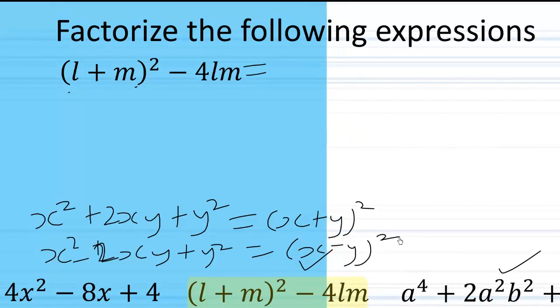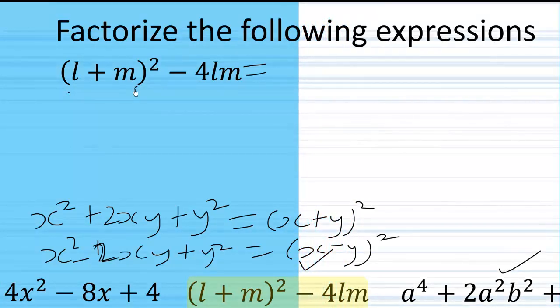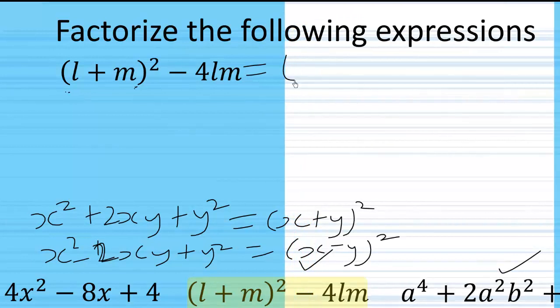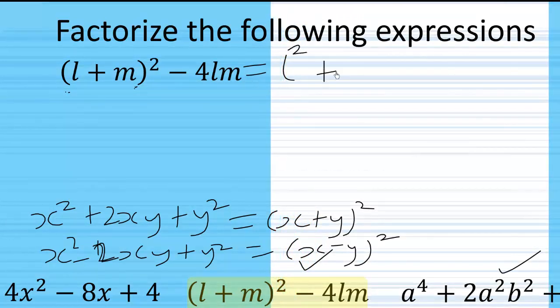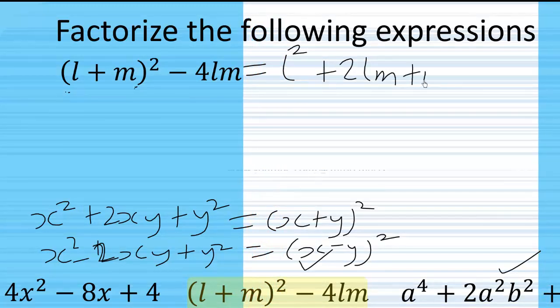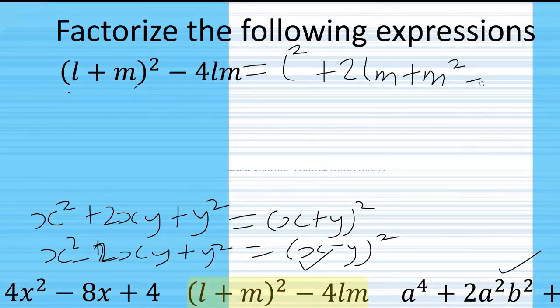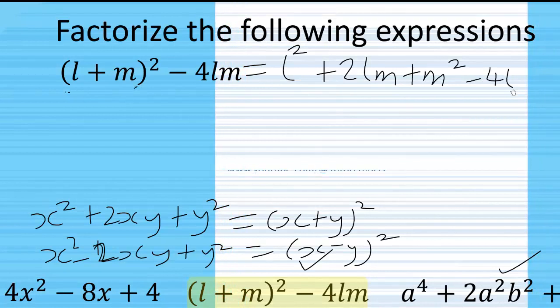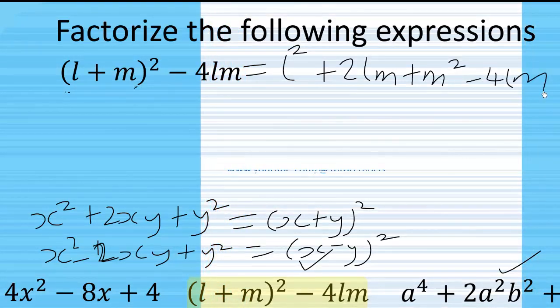So using that identity, (l + m)² will be equal to l² + 2lm + m² - 4lm.